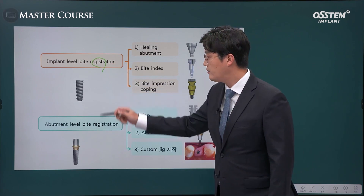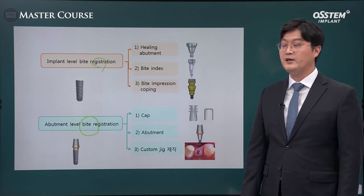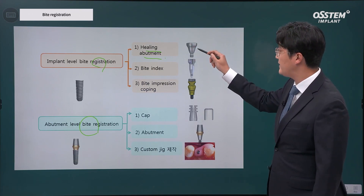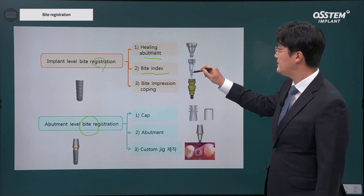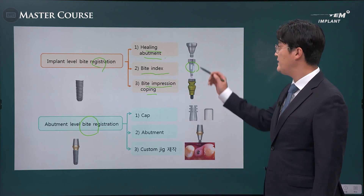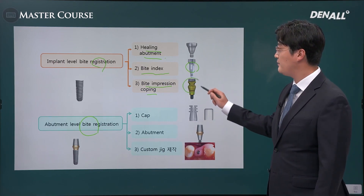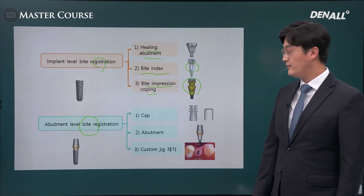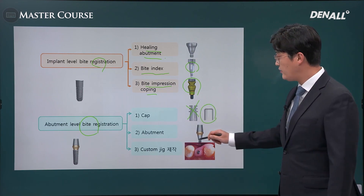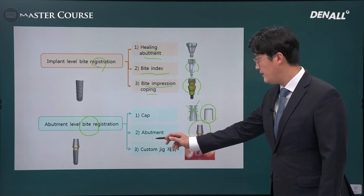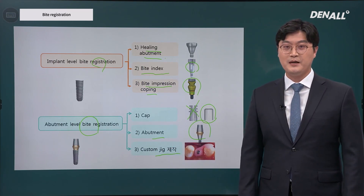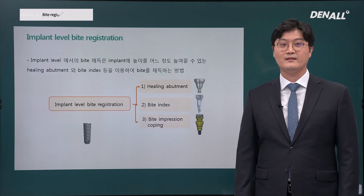Taking implant-level bite registration and abutment-level bite registration are different. At the implant level, a patient will have a healing abutment so you could register bite on that, or using a bite index, or using a bite impression coping — the bite impression coping approach is most popular these days as it combines both functions. At the abutment level, a plastic cap can be used to register bite, or directly on the abutment like when you work on a natural tooth, you can take bite. For a custom abutment, a custom jig is created to take bite registration.